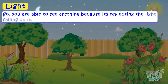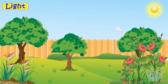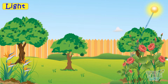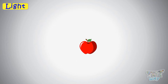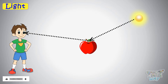You are able to see anything because it is reflecting the light falling on it. We can see this flower because light from the sun is falling on it, and light is always reflected off the thing on which it falls. That reflected light from those objects makes us see that object. Here is an apple — you can see this apple because the light falling on it is getting reflected back into your eyes.